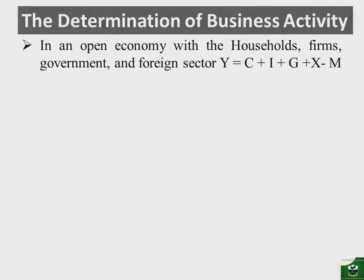So in an open economy with the households, firms, government and the foreign sector, our equilibrium income equation using the expenditure approach is consumption plus investment plus government expenditure plus export minus the import. Now, remember that this part here, we call this the net export, NX. So you may find that in other books they have used the NX. This is just to say net export, which is export minus the import.